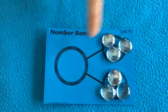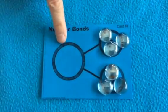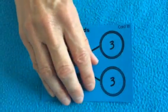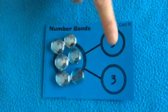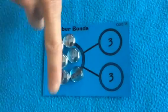I have my part, part, but I still don't know how many altogether. I need to find out the whole number. So that's right. What I'm going to do is push them all over here and then I'm going to count them. One, two, three, four, five, six. So I know that three and three more makes six.